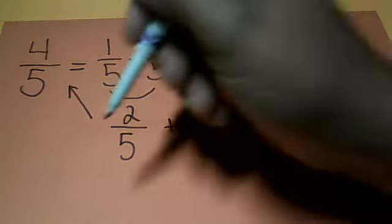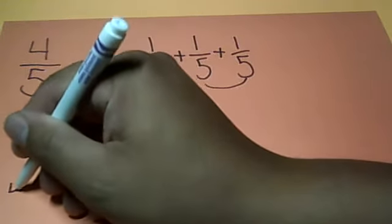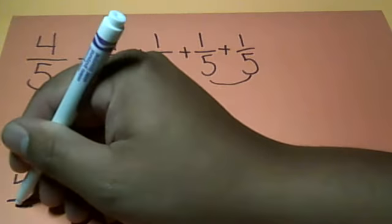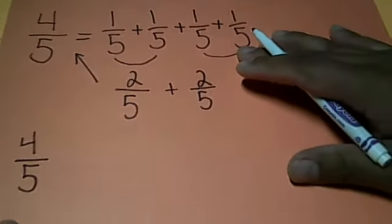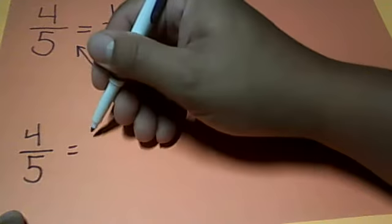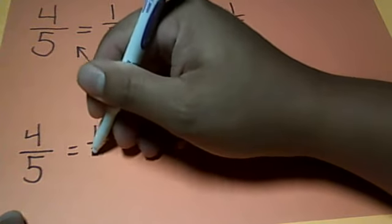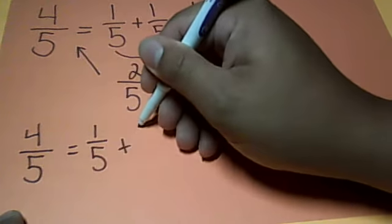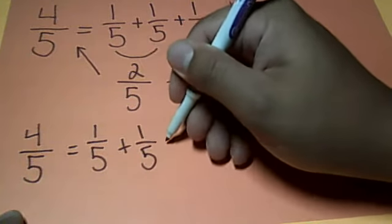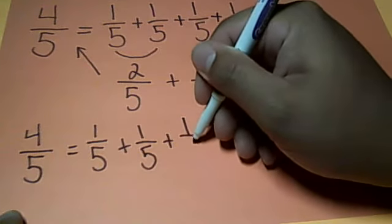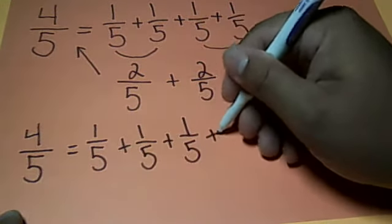For example, if I did 4 fifths again, and I decomposed it, 1 fifth, plus 1 fifth, plus 1 fifth, plus 1 fifth.